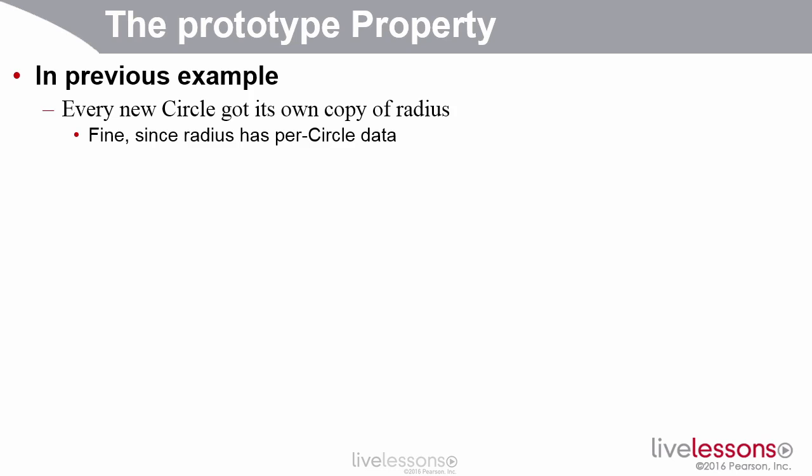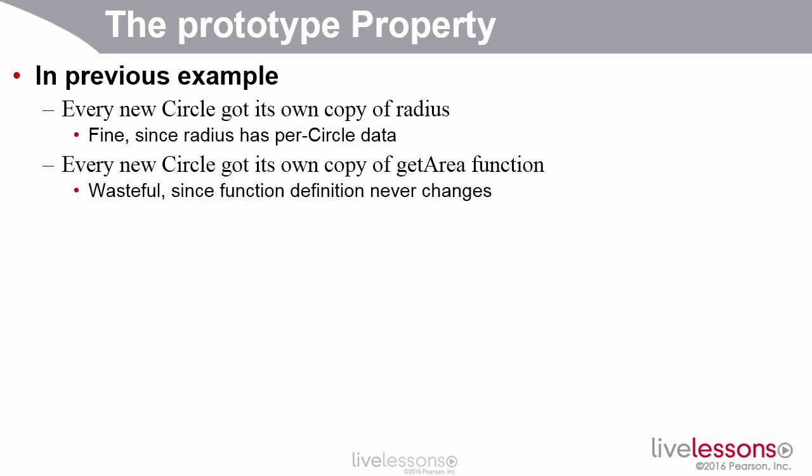So it makes sense that each time you make a circle, it has a separate radius. If you change the radius of one circle, it doesn't change the radius of a different circle. Fine. But each new circle also had its own copy of the getArea function or method. Well that's kind of wasteful, because the getArea function is the same for every circle.